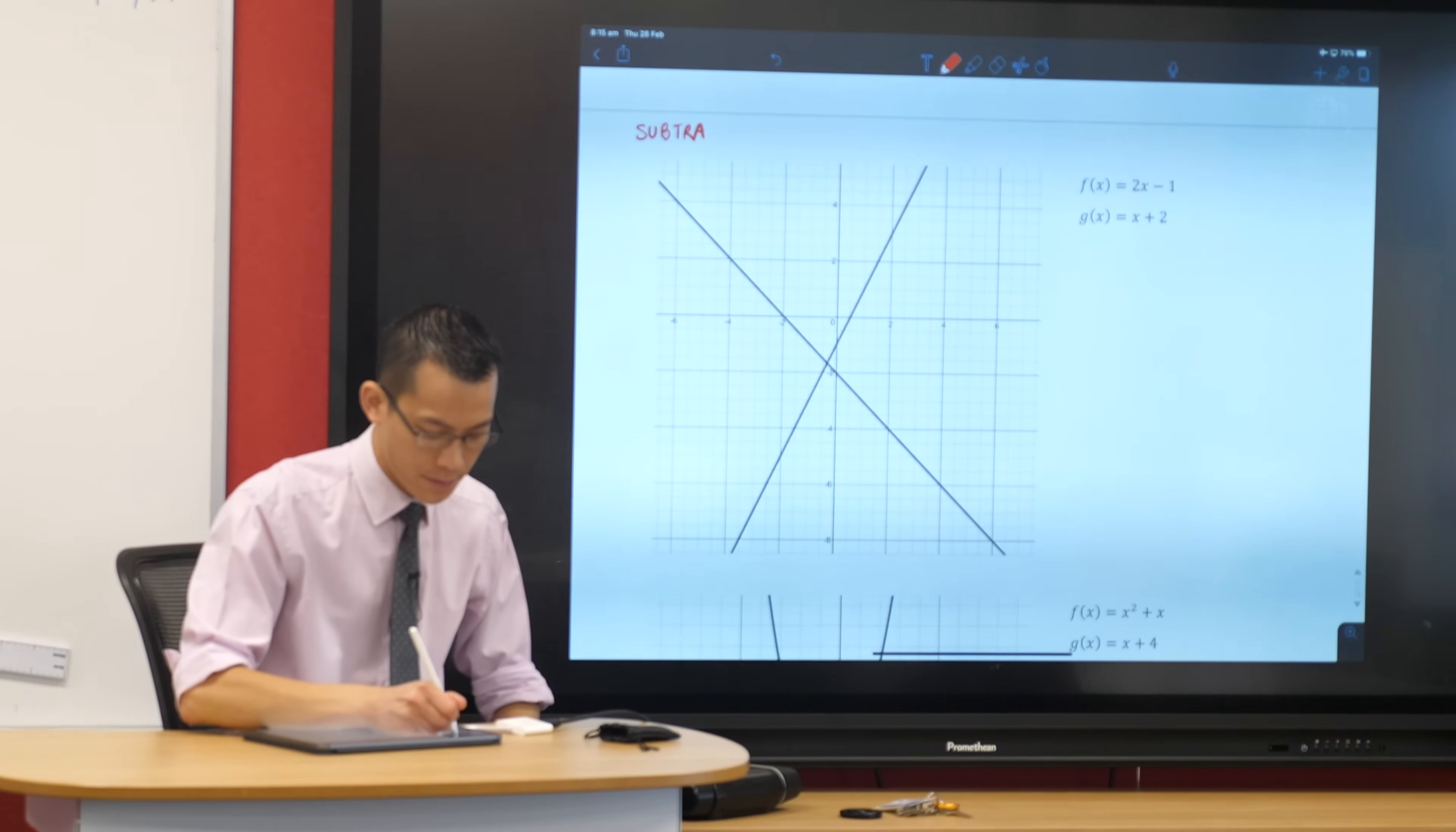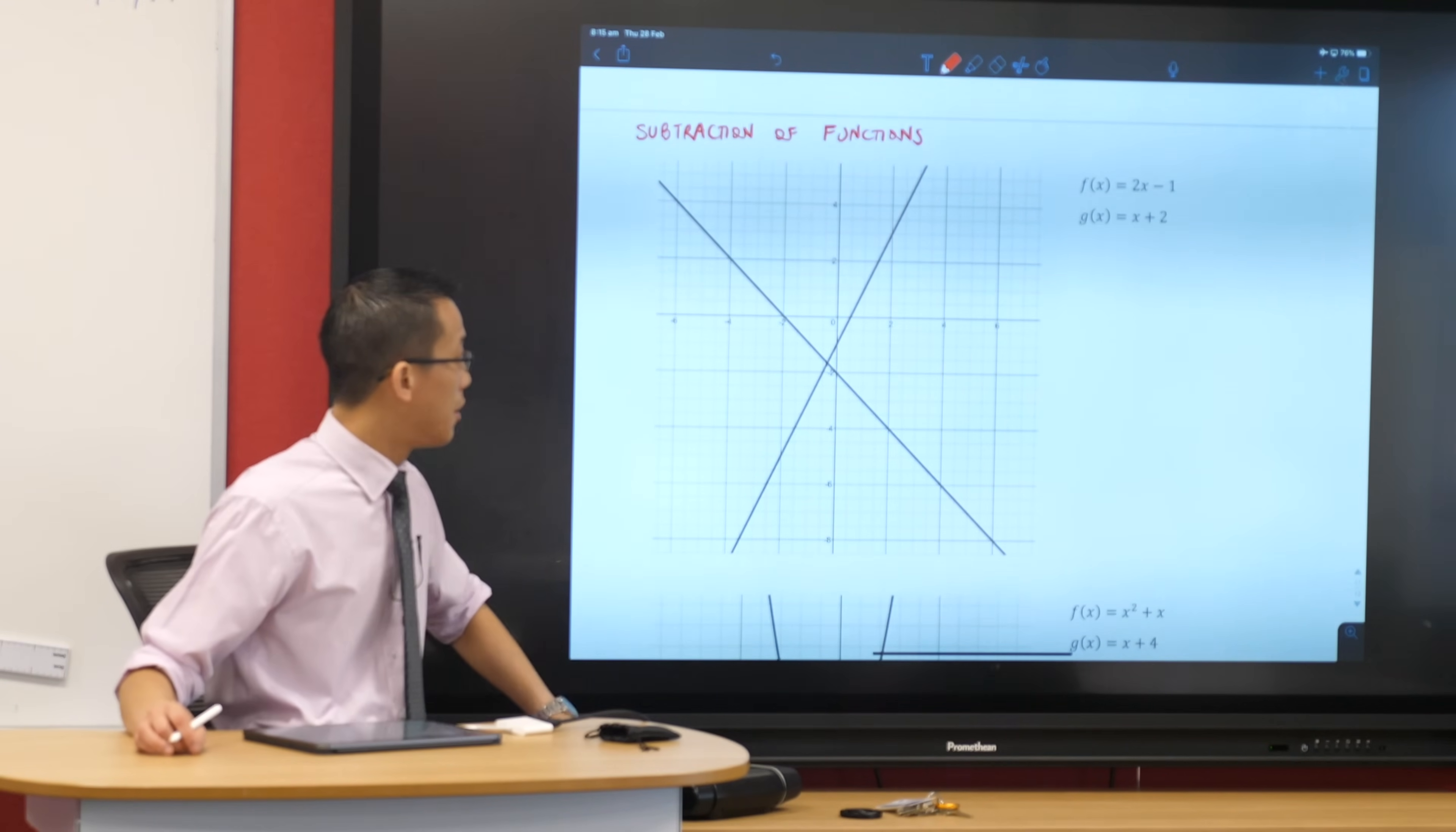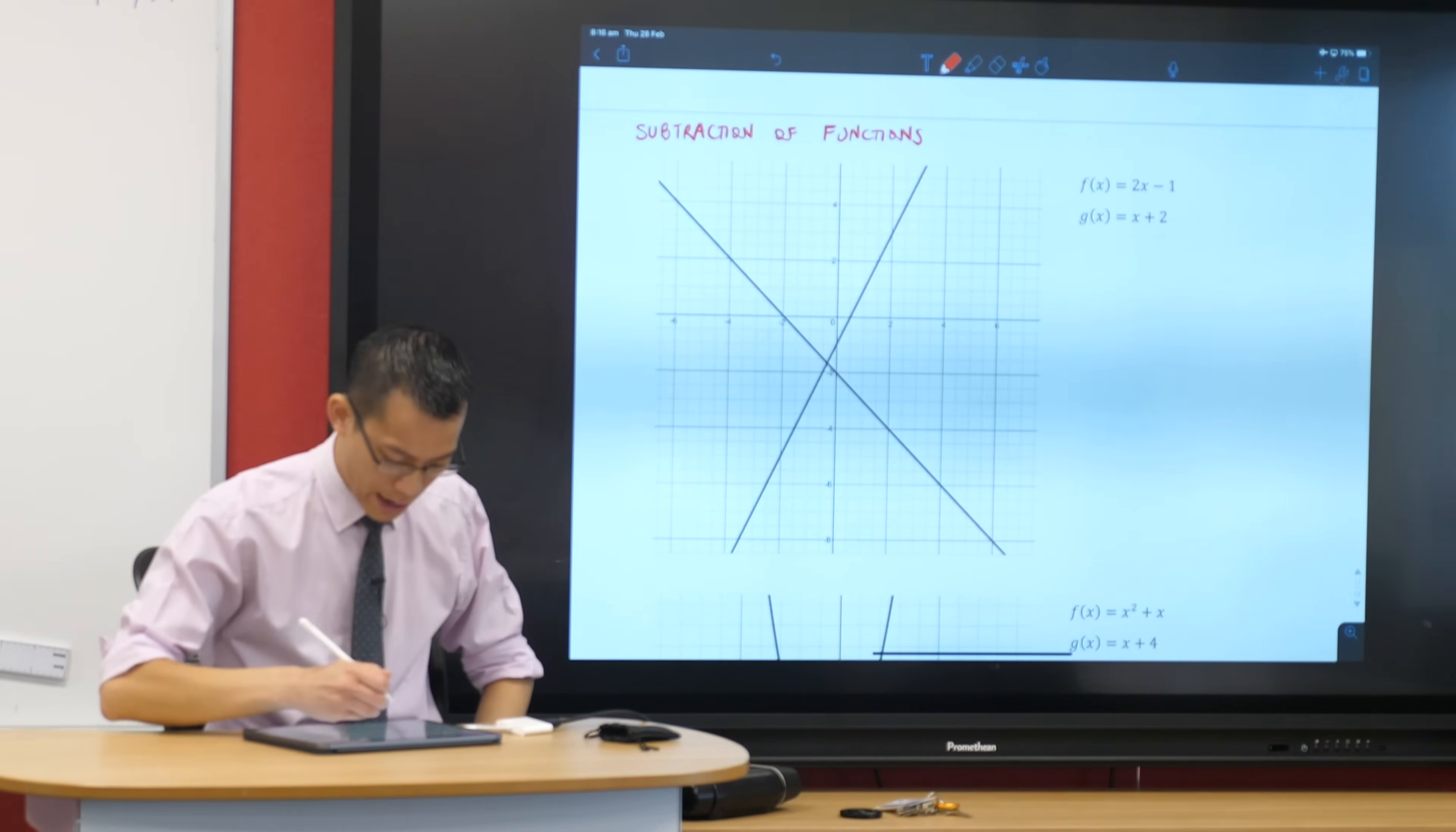At the top of this page, subtraction of functions. Now, just like before, I've given you an f of x and a g of x. Which one do you think is f of x? Which graph? How would you describe it? The x-intercept, the y-intercept for f should be minus one. That looks like this one. And it's steep, so that's like gradient two. So if we can actually go ahead and label that, let's call this one y equals f of x.